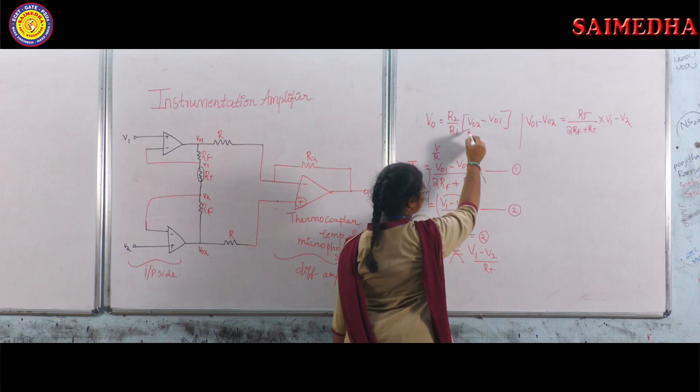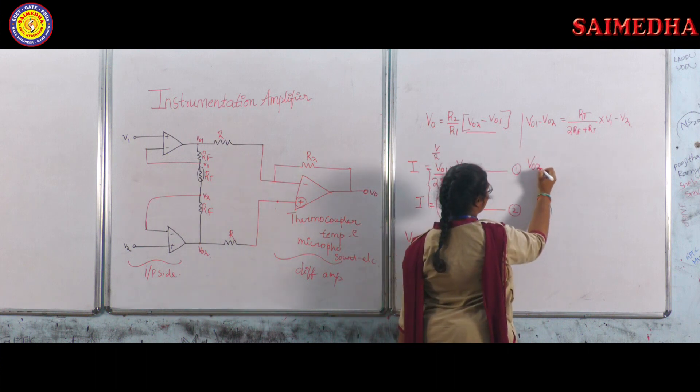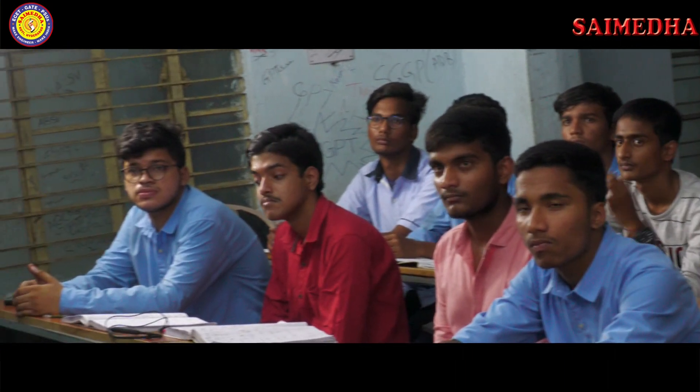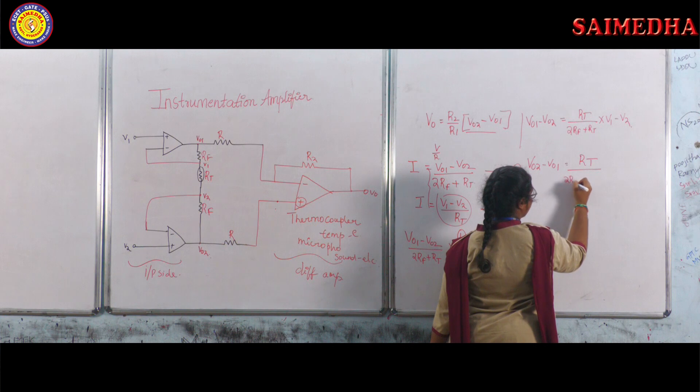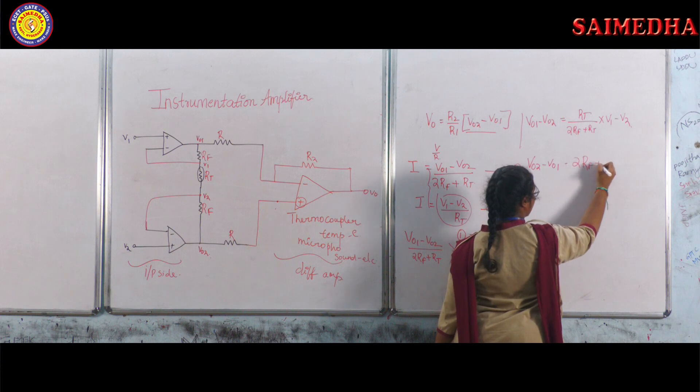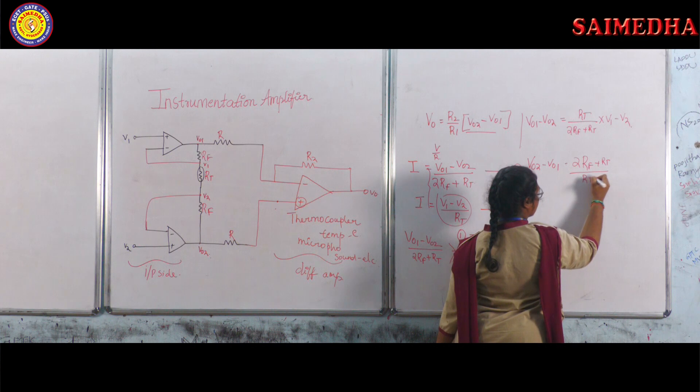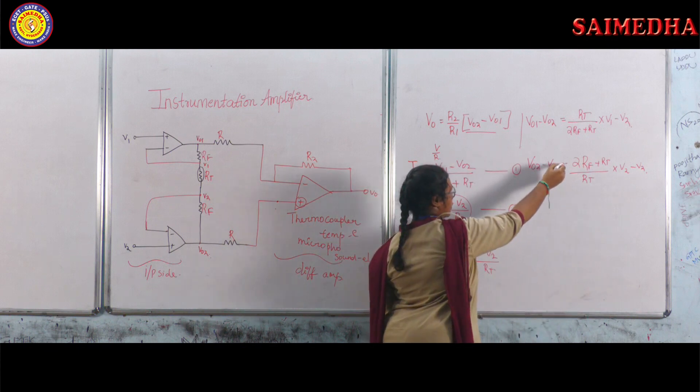Now we need to find out for this one. So we will interchange this like VO2 minus VO1 equals 2RF plus RT by RT into V1. You can write it like this way also. Now we got the equation for this.